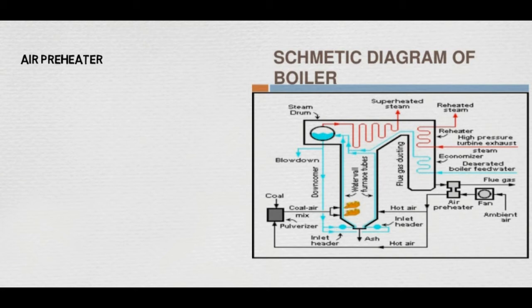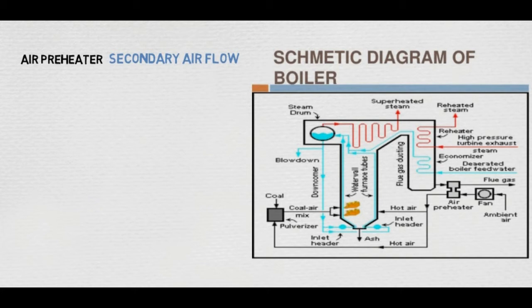The air through the FD fan, which is a forced draft fan, passes through the APH — that is, the air preheater — and then into the boiler. This is also called the secondary airflow, which supplies air into the boiler for combustion.